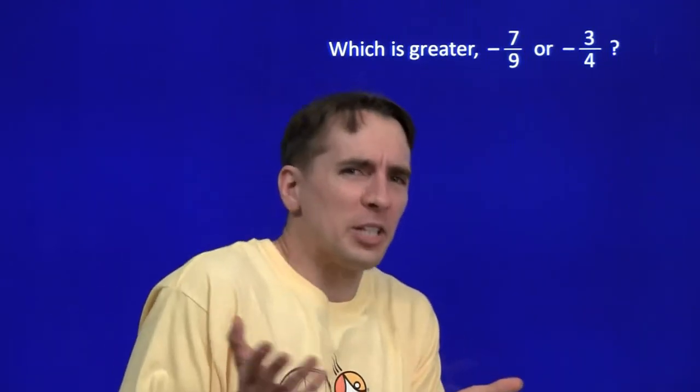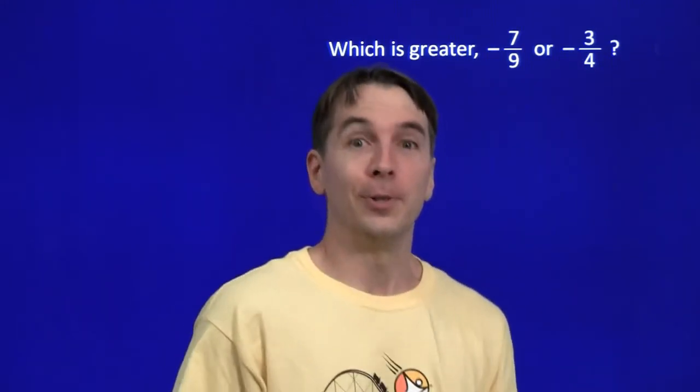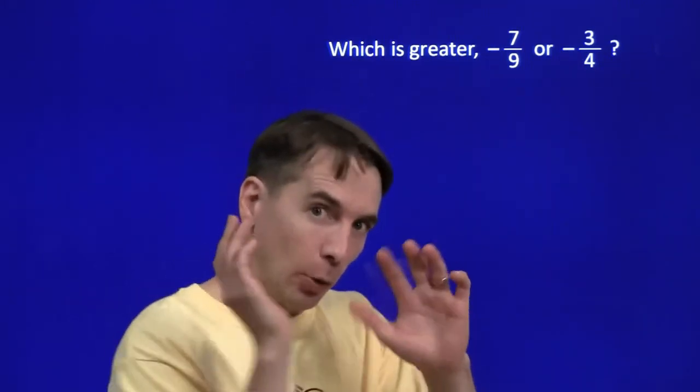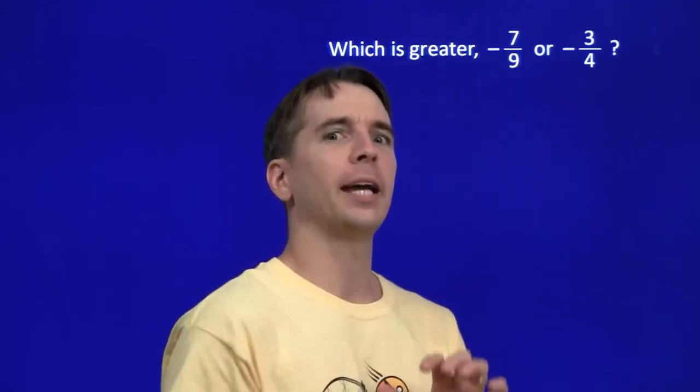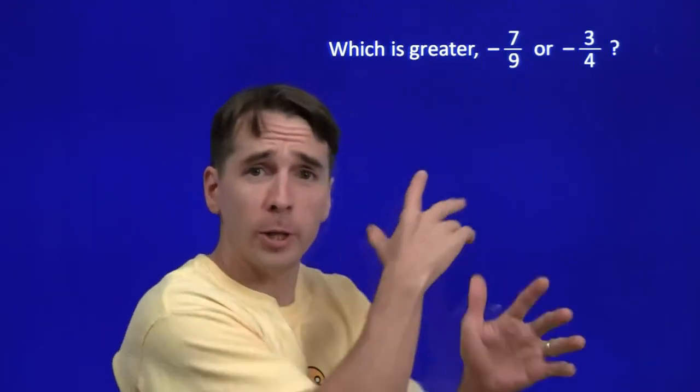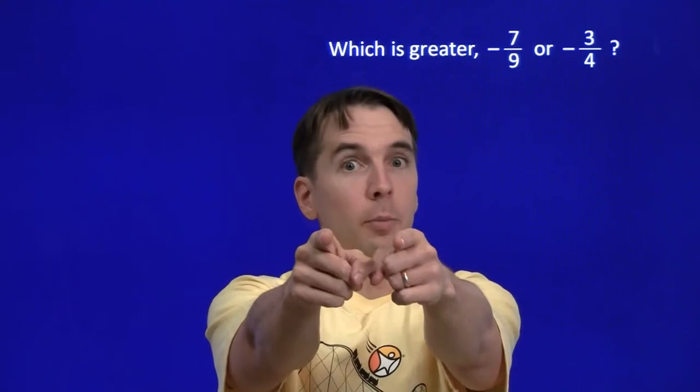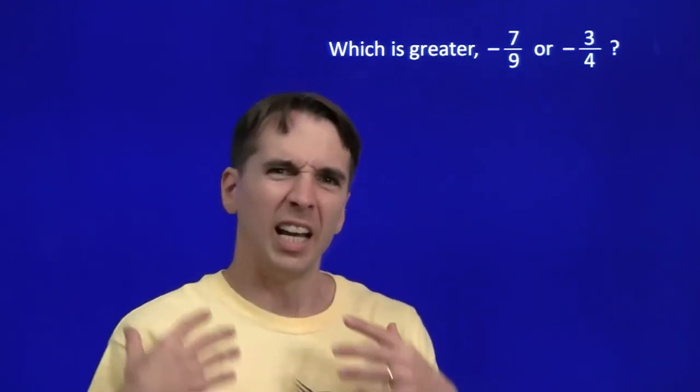You know, one of my strategies when dealing with confusing problems is ignore the confusing part. Ignore the confusing part, and then you solve the not confusing part of the problem, and then you bring the confusion back at the end and see if it then makes more sense. So that's what we're going to do here. Your job is going to be to remember the confusing part. So you remember the negatives. And I'm going to think about the problem as if they were both positive.